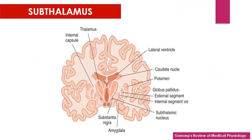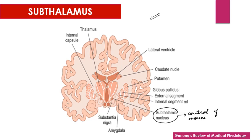The third portion of the diencephalon is the subthalamus. The subthalamus forms a very important component of the basal nuclei, helping in the control of movements by forming an intermediate structure in the caudate and putamen loops.